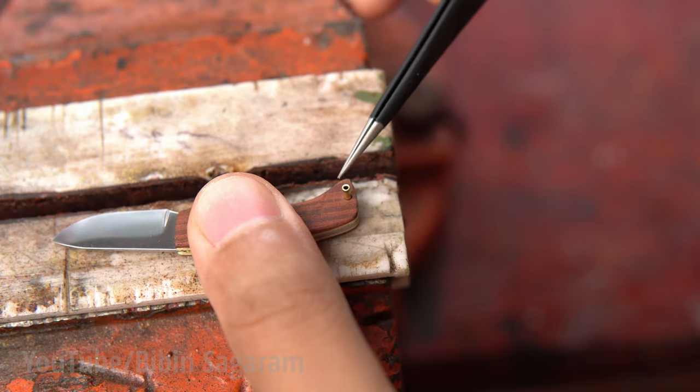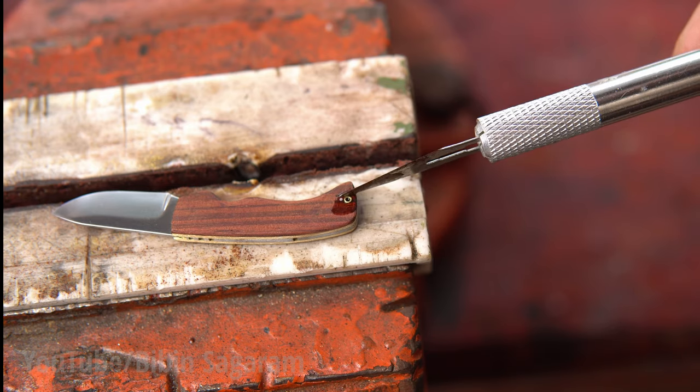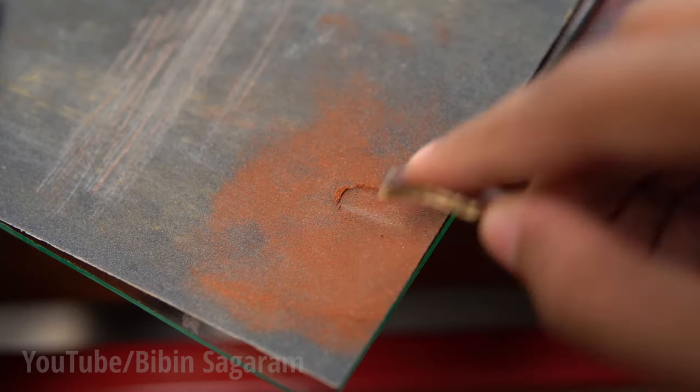Brass tube is cut, glued and sanded down to the handle. This hole can be used to attach the knife to other things like a lanyard.